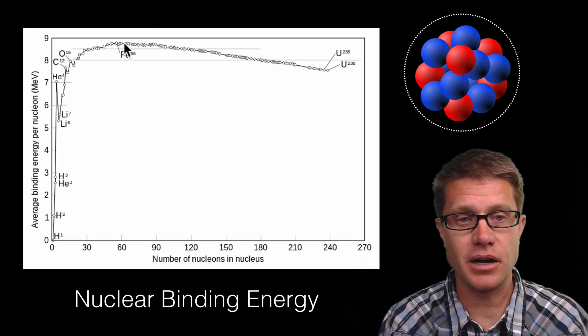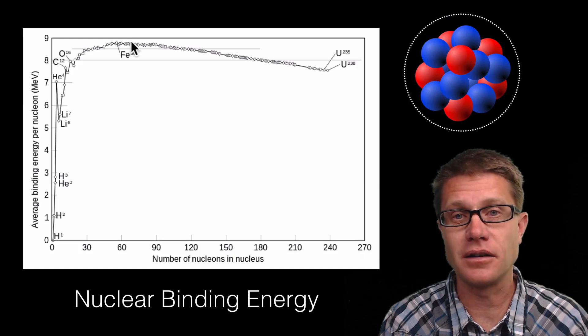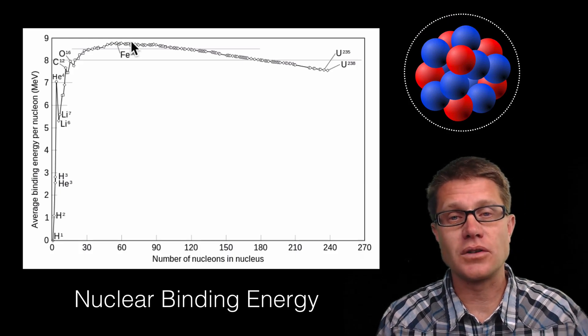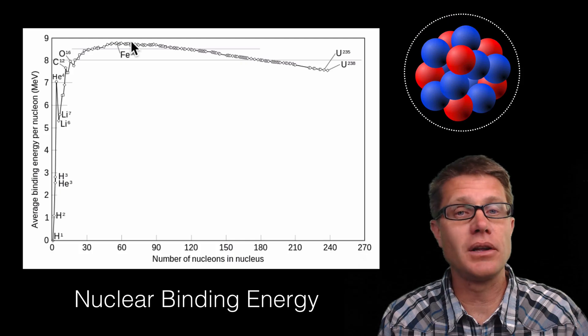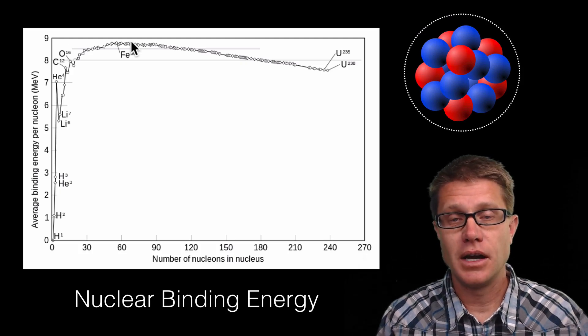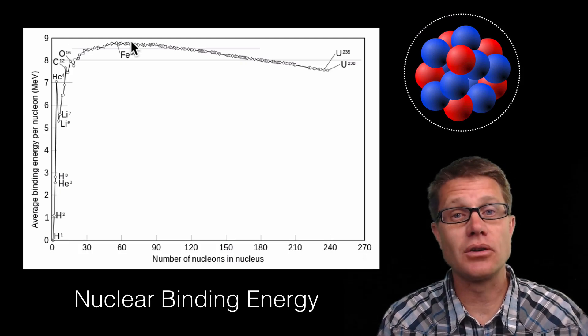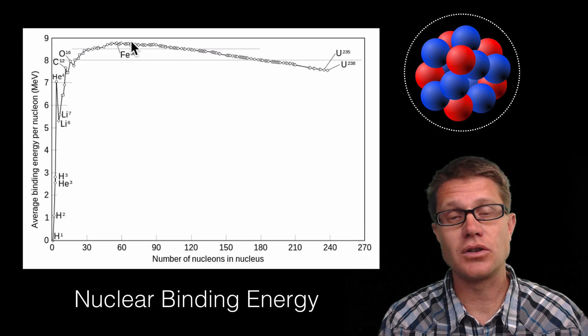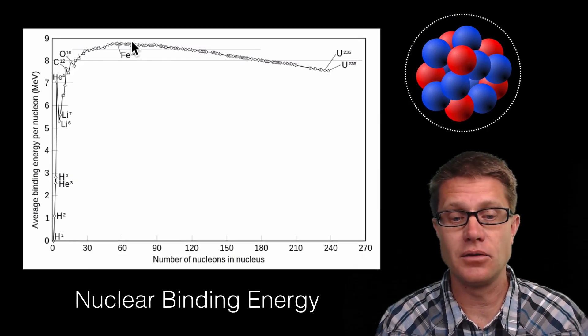But what eventually happens is once we get nucleons inside there that are starting to move outside of this scale, and you can see on this graph where that occurs, once we go past iron, now the strong nuclear forces are not great enough to hold that together. Now electromagnetism starts to take over. And that is why we start to have radiation occur. These are not stable anymore. And so we are starting to lose bits of that nucleus.